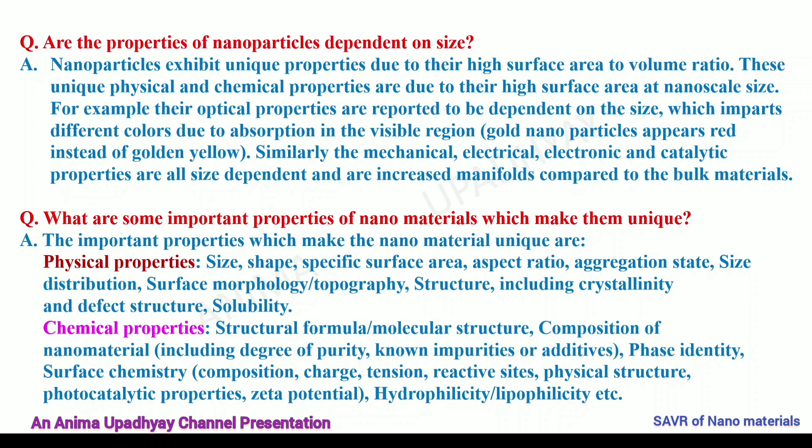What are some important properties of nanomaterials that make them unique? The important properties include both physical and chemical properties. Physical properties include size, shape, specific surface area, aspect ratio, aggregation state, size distribution, morphology or topography, structure including crystallinity and defect structure, and solubility. Chemical properties include structural formula, molecular structure, composition including degree of purity and impurities present as additives, phase identity, surface chemistry including composition, charge, tension, reactive sites, physical structure, photocatalytic properties, zeta potential, and hydrophilicity or lipophilicity.